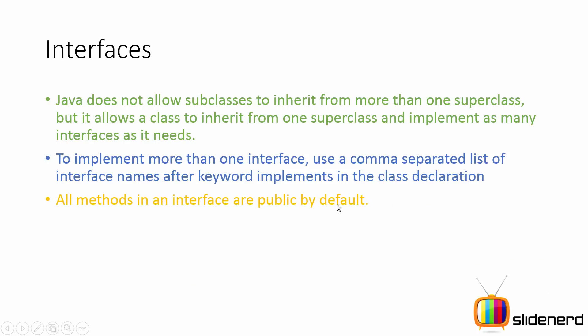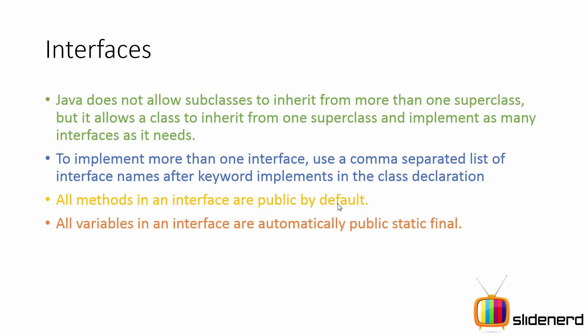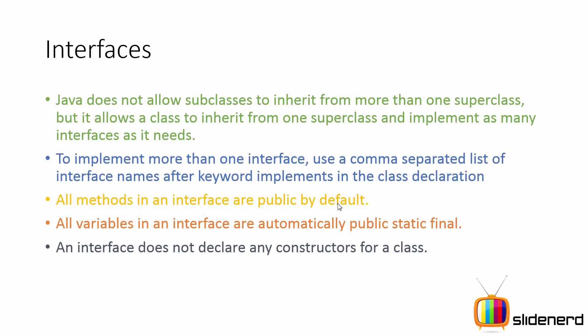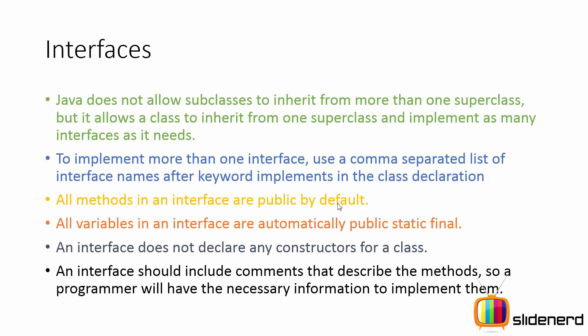You don't have to write public void — it's already public by default. The same way, all variables in an interface are automatically public static final. The word static comes in because interfaces don't have instance variables, meaning everything is static inside them, and they are final because they only define constants. Interfaces do not have constructors and do not declare constructors for themselves or any other classes.